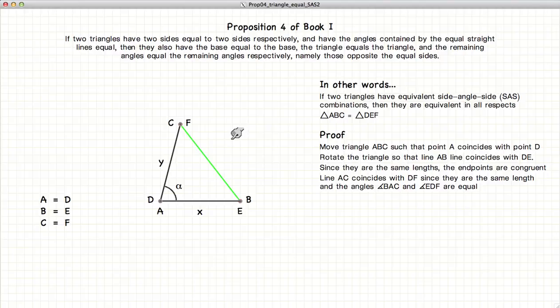Now finally, since we've already established that C and F coincide with one another, and E and B coincide with one another, then the line CB must also lie along the line FE.